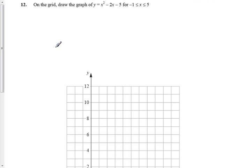Okay, so this question, we've got the grid here, and we're asked to draw the graph y equals x squared minus 2x minus 5, with x values running from minus 1 to 5.